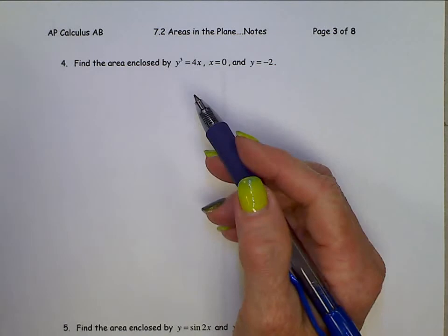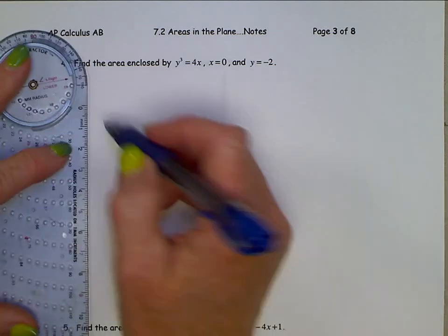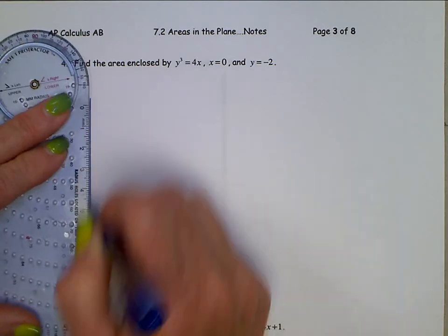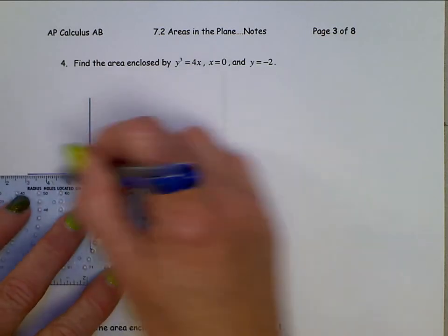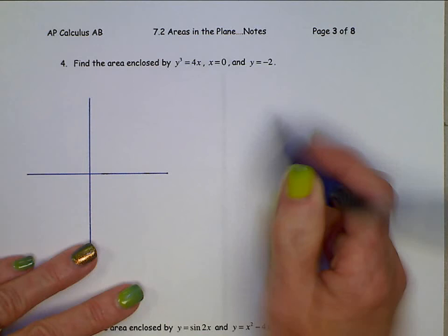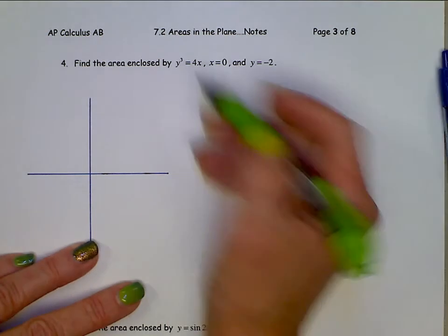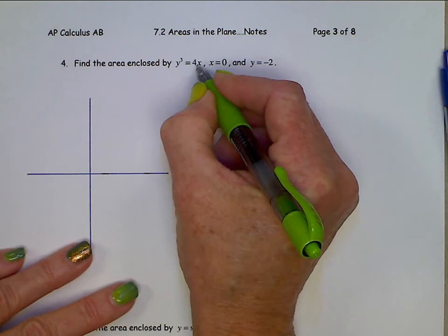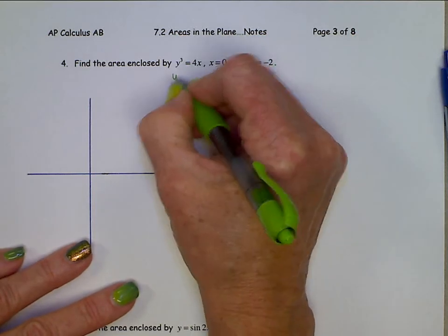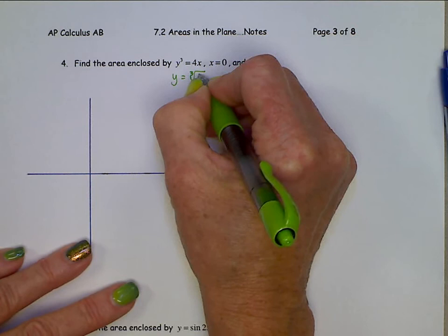Again, sketch a graph. This is the first time that this has happened where we don't have a function as y equals. So we are going to have to take the cube root of both sides, and y will be the cube root of 4x.